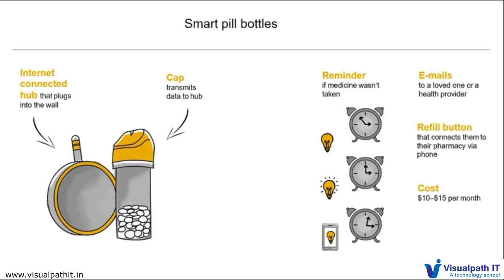A second example of today's IoT prototype is Smart Pill Bottles. This prototype contains a hub that connects to the wall and is connected to the Internet. The cap transmits data to the hub, and it always reminds us whether we have taken the medicine or not, whether we have missed it. If the refill time comes, a refill button automatically connects all the data with the pharmacy via phone, and it is very affordable.